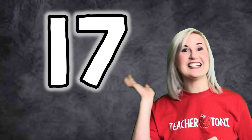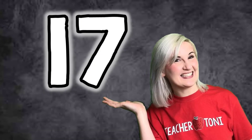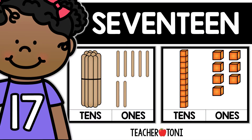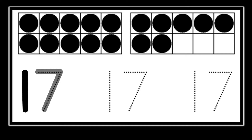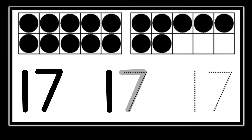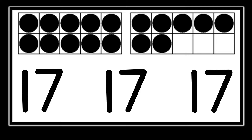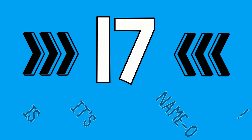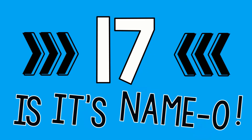17. I can write a teen number. 17 is its name. Oh, 1, 7, 1, 7, 1, 7. 17 is its name.